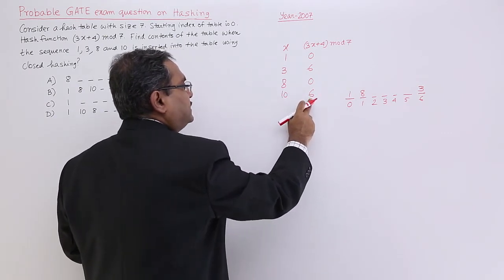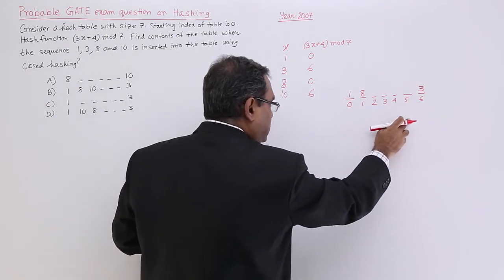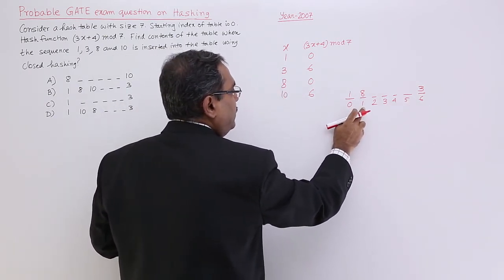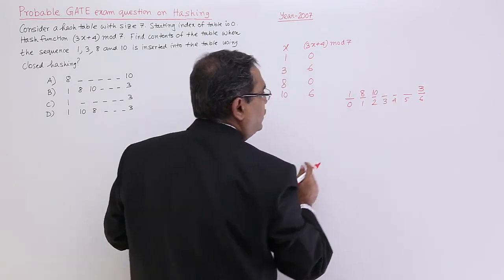10 will be going to the 6th place, but that is preoccupied. Go to the circular logic, preoccupied, preoccupied. It will be coming to this location.